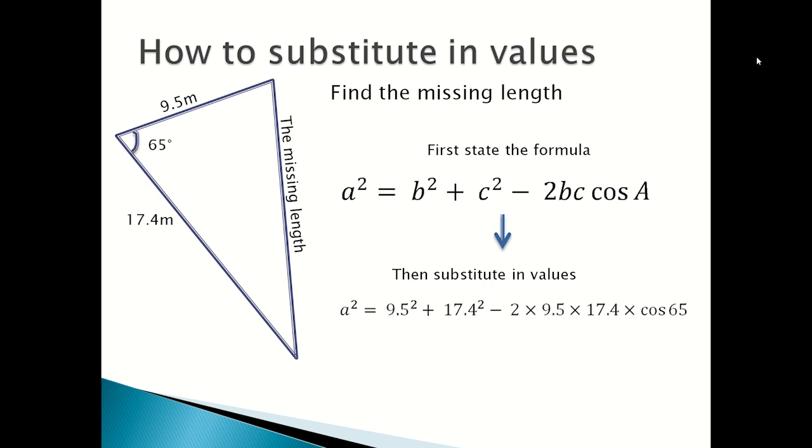When you have B squared and C squared and then minus 2BC, usually put the smaller number as B and the bigger number as C. But it doesn't really matter which way, because it will still get the right answer. And then from there you continue the working out.